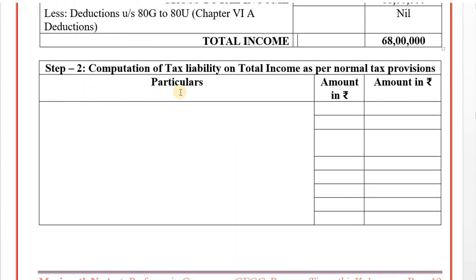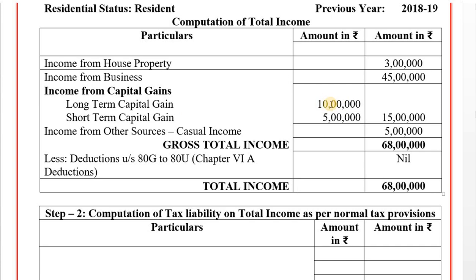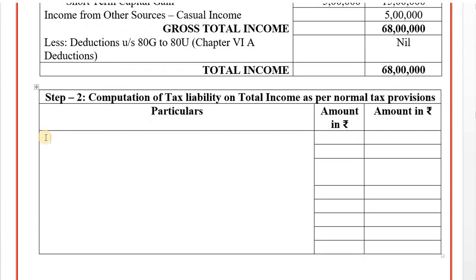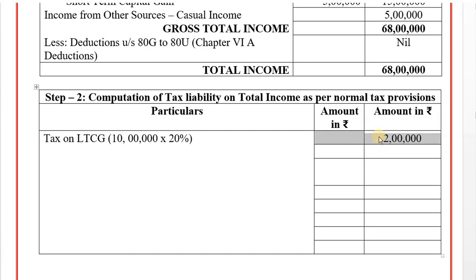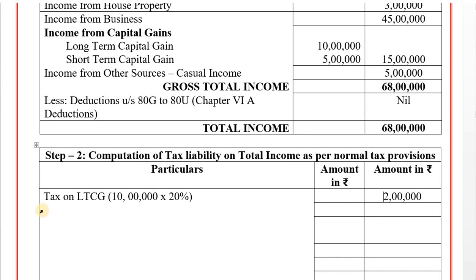Step number 2: Computation of tax liability on total income as per normal provisions of the Income Tax Act. Long-term capital gain is taxed at 20%, casual income at 30%. Assuming turnover is less than 250 crore, the tax rate is 25%. First, tax on long-term capital gain: 10 lakhs at 20% equals 2 lakhs.